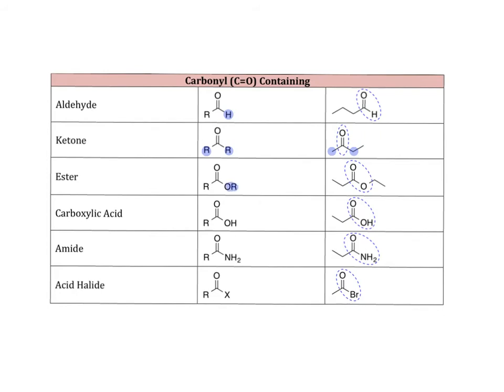If you have an OR group, meaning an oxygen with some carbon or carbon chain attached to it, that's called an ester. If it's an OH, that is called a carboxylic acid. If it's a nitrogen, that's an amide. And if it's a halogen, that's an acid halide.